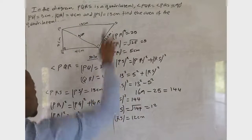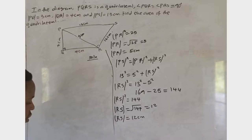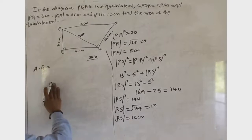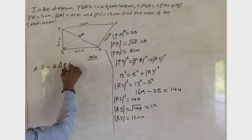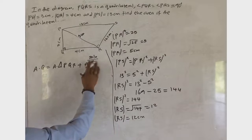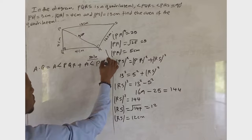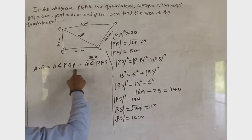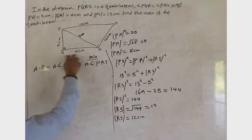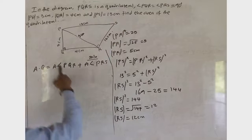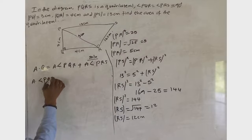The area of the quadrilateral is equal to the area of the first triangle PQR plus the area of triangle PRS. Let's find them one by one to avoid mistakes. We know the area of a triangle is equal to one-half times base times height.